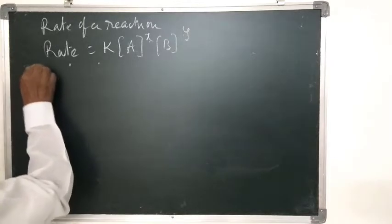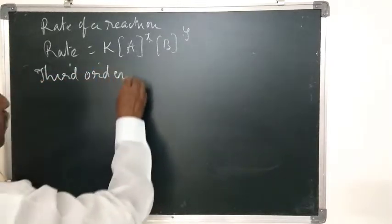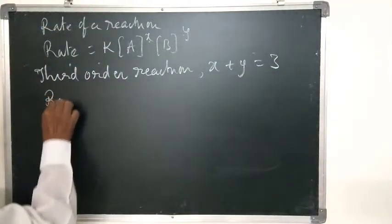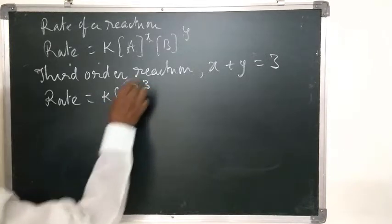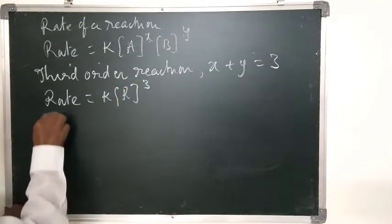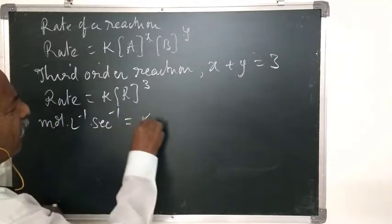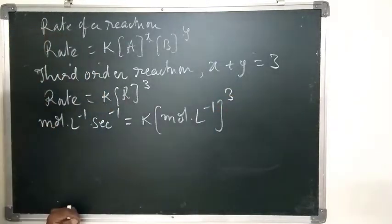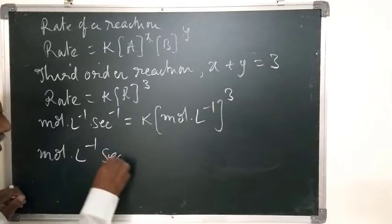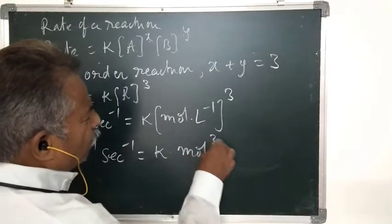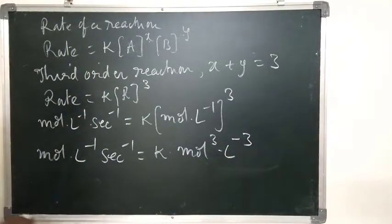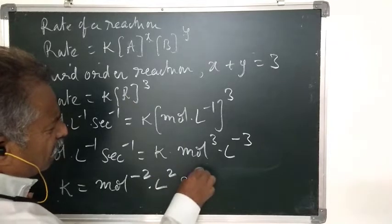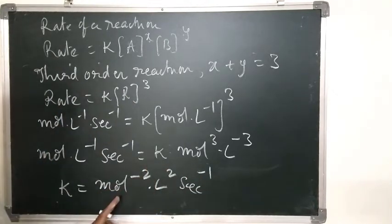Unit of rate constant of third-order reaction: X plus Y equal to three, so rate equal to K into R to the power three. Mol per liter per second is equal to K into mol per liter to the power three, which is mol cubed liter minus three. Therefore K equals mol minus two, liter squared, second minus one. This is the unit of rate constant of third-order reaction.